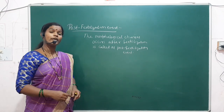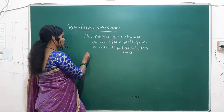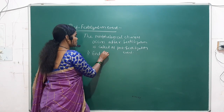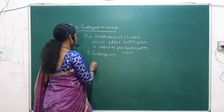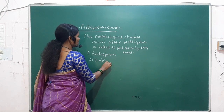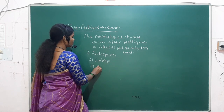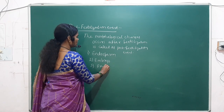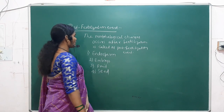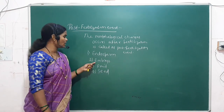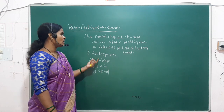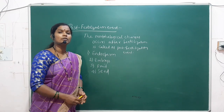Here we are going to see four events. The first one is endosperm formation, the second one is embryo formation, the third one is fruit formation, and the fourth one is seed formation.